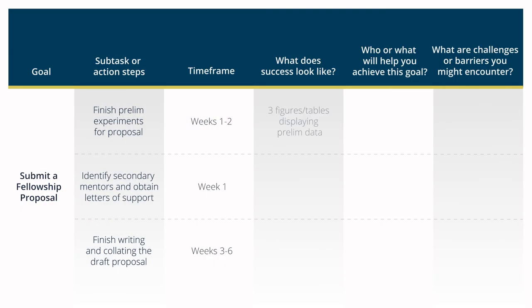Success in this case looks like a submitted — well, let's face it — a funded proposal, but success may also be submitting it without the process being stressful. Drafting things well in advance of when feedback is needed could factor into what success looks like, which is why the postdoc has outlined an aggressive timeline. Success can also be defined as the final products for each task, like data figures or tables representing the experiments she's completed.